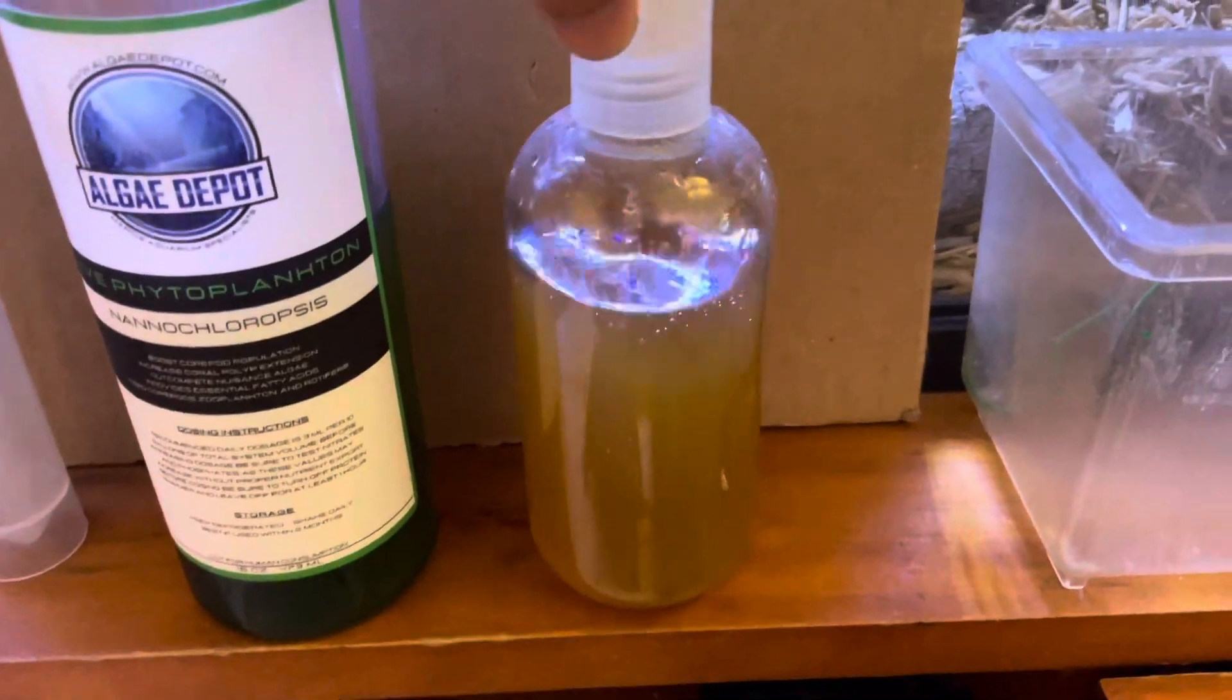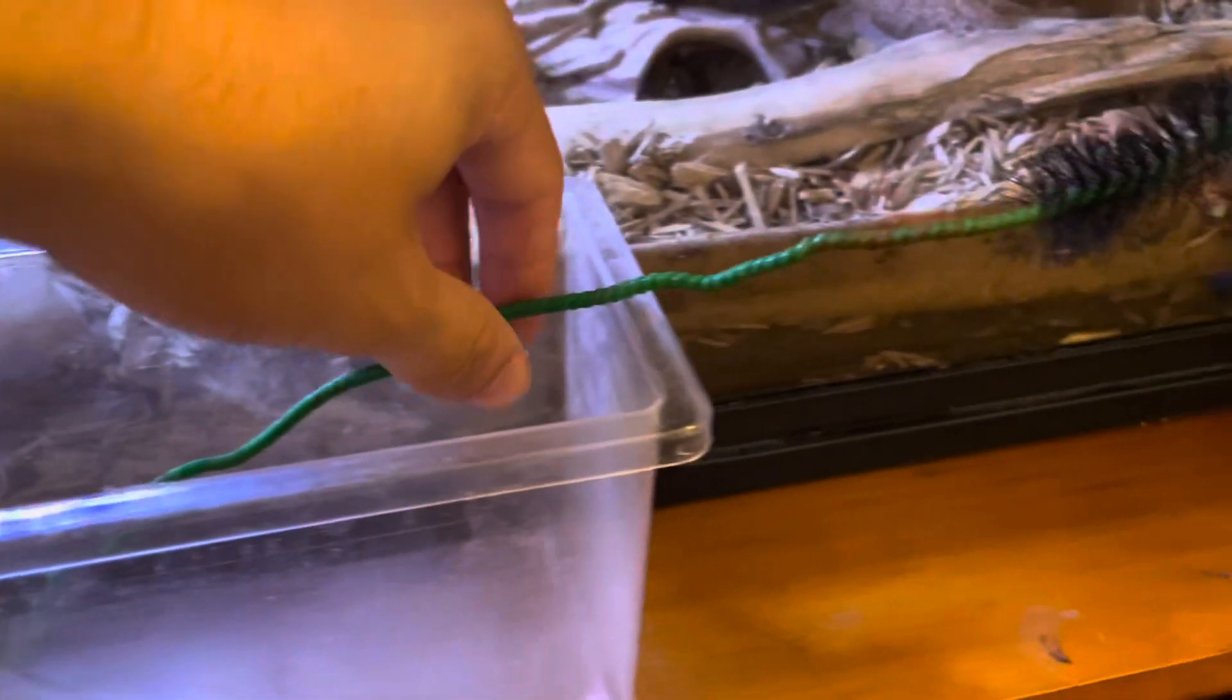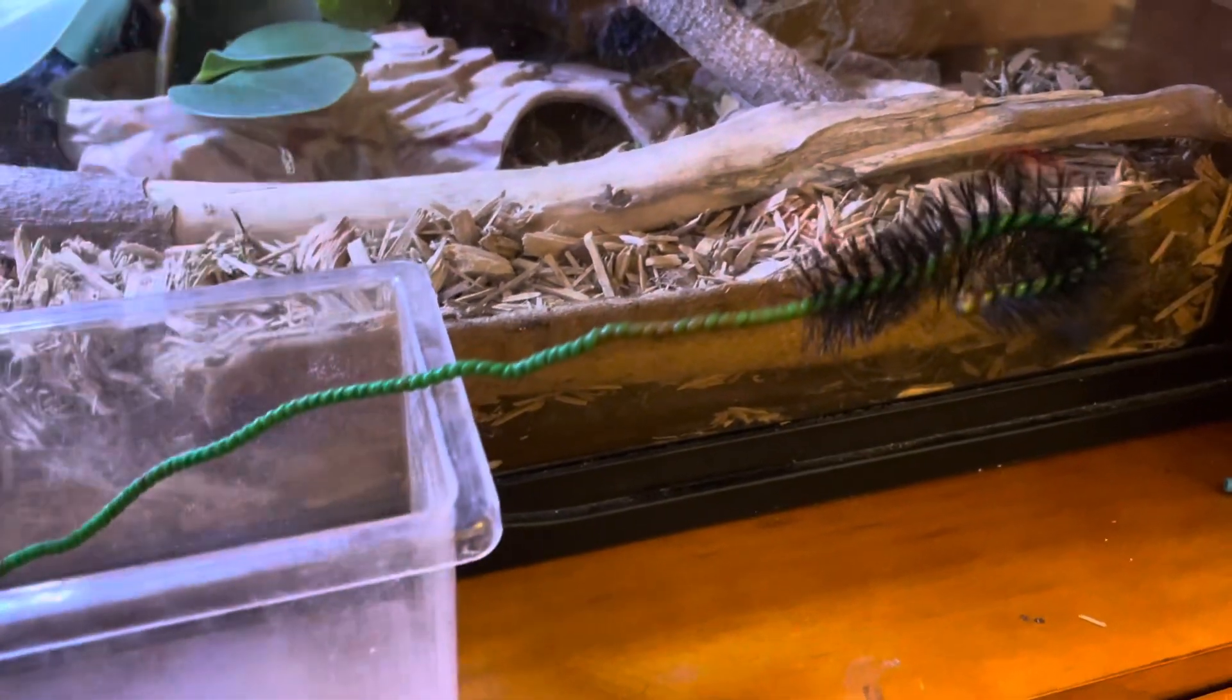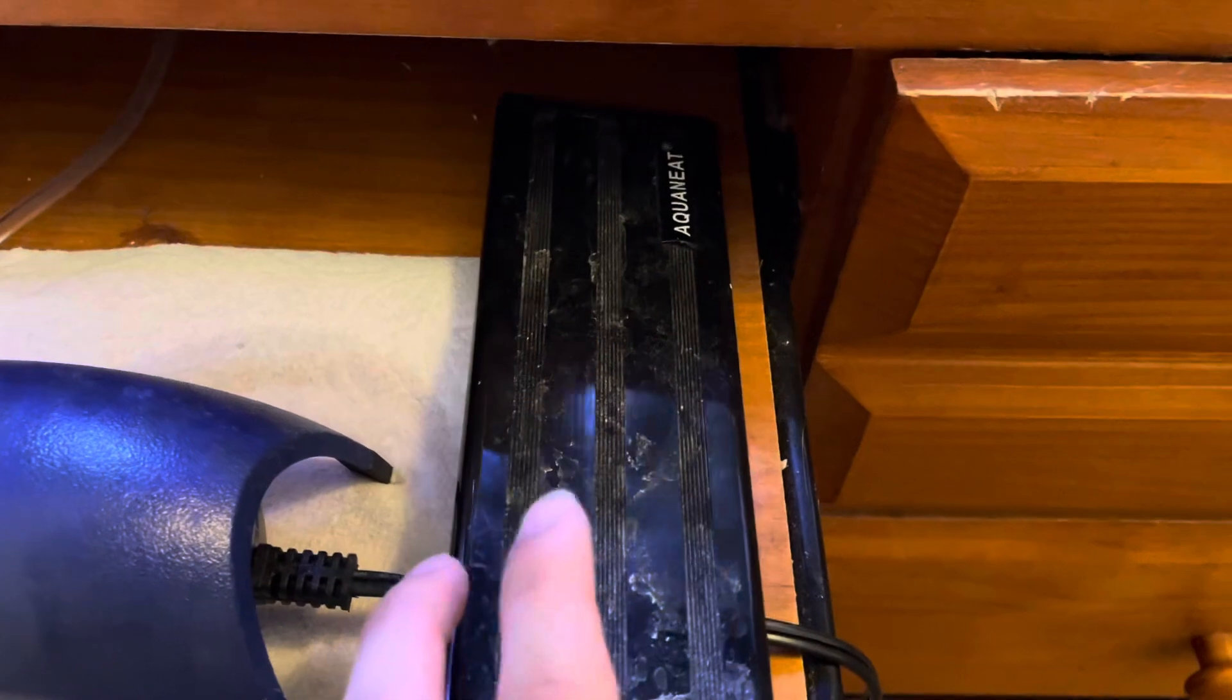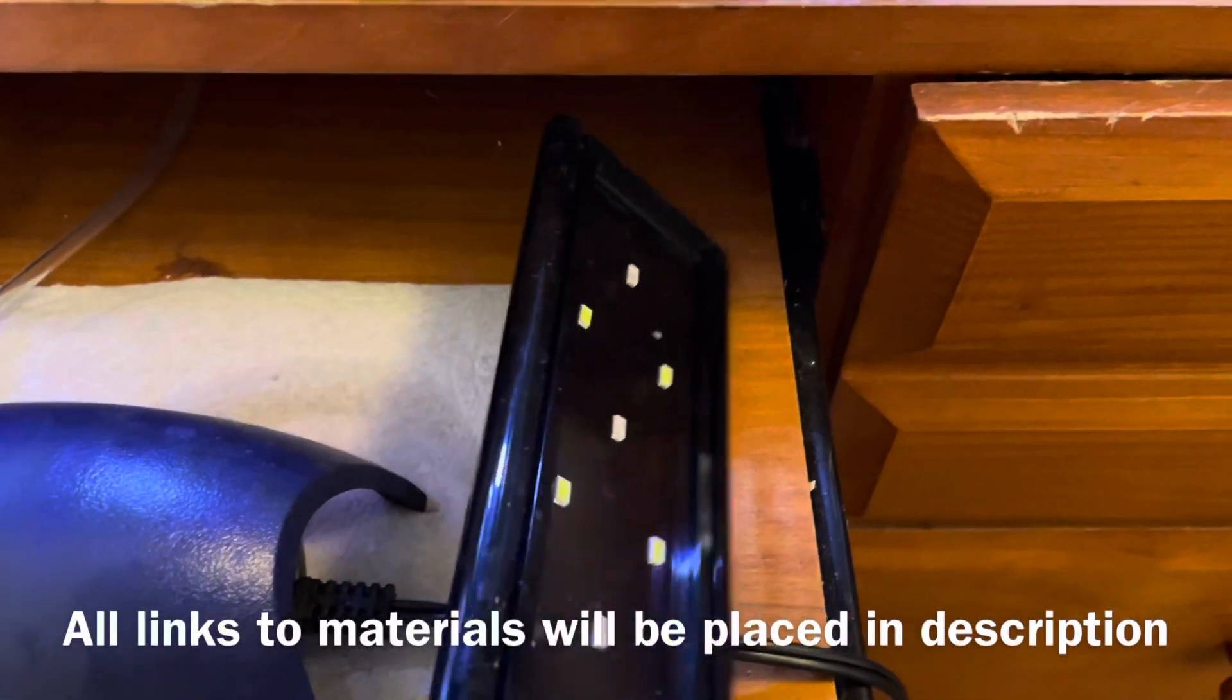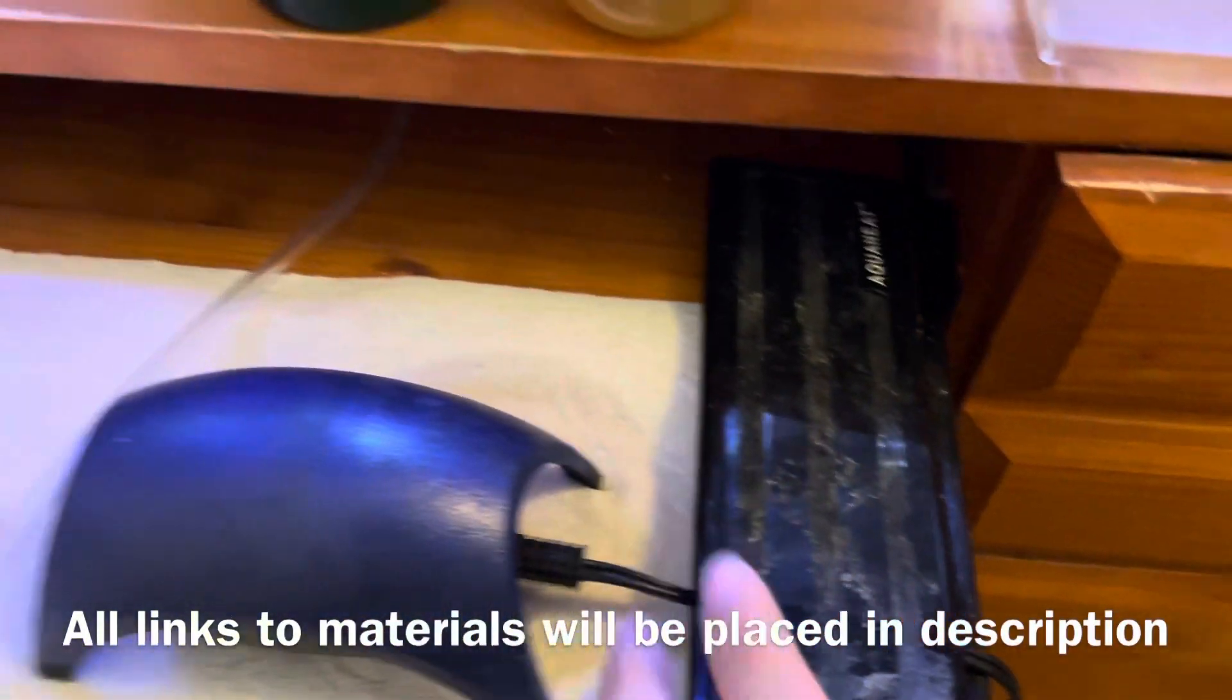You're going to want some F2 fertilizer and then I like to use a scrubber for the tubes and the bottle and then you're also going to need a light. I'm going to put the link for this in the description. It's a pretty cheap light but it works really well and yeah let's get started.